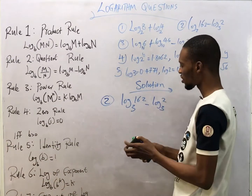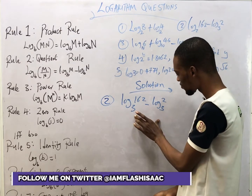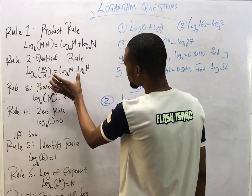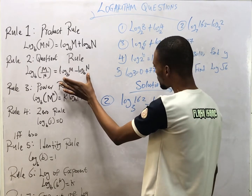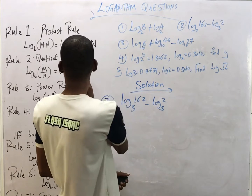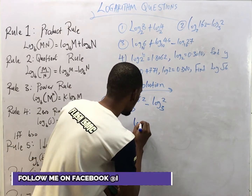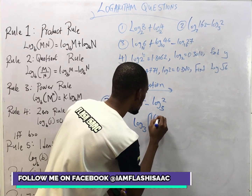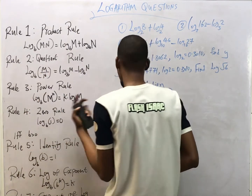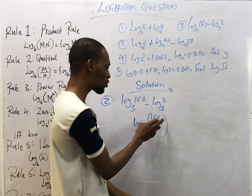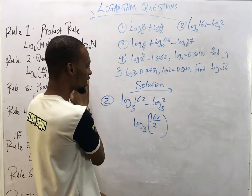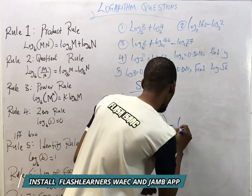Looking at the next question, this is subtraction with the same bases, which relates to the quotient rule. When the bases are the same and you have subtraction, even if the numbers are different, you can change it to division. So I can change this using the second law to say this is log(162/2) to base 3. Compare it to the quotient rule form: m over n, where 162 equals m and 2 equals n — so we can put it in that form.